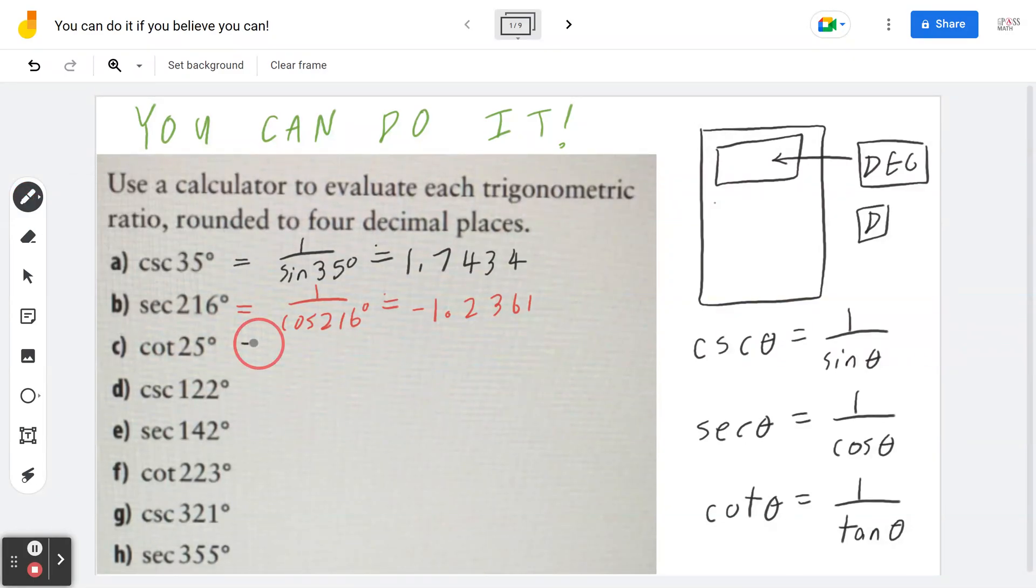If I look at the next part, part C, cotangent of 25 degrees is 1 divided by tan of 25 degrees. I press 1 divided by tan of 25, which is approximately 2.1445.